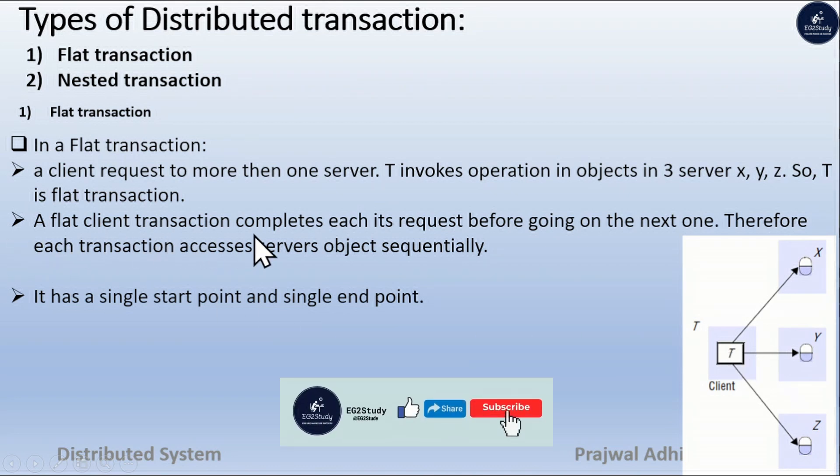A flat client transaction completes each its request before going on the next one. Therefore, each transaction accesses servers object sequentially. It has a single start point and single end point.